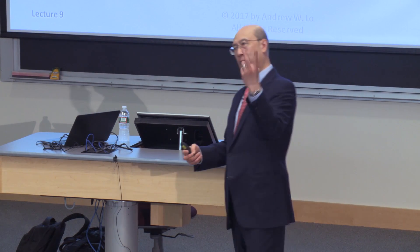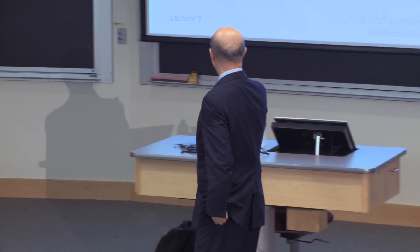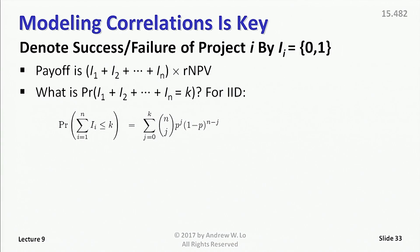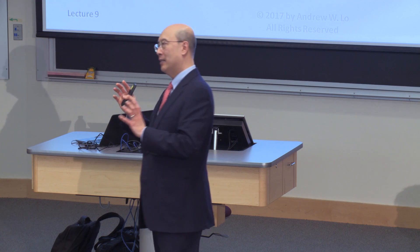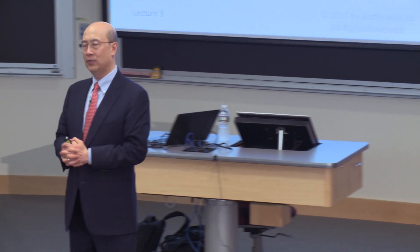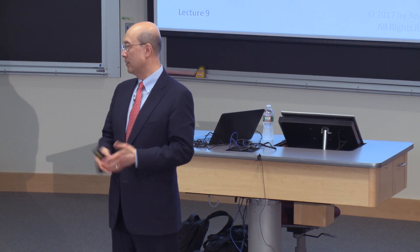If it's independently and identically distributed, like those two green pieces of paper I started out with, then the answer is simple — the distribution is just a binomial, which you covered in your introductory data models and decisions course. But what if the correlation is not zero? How do we capture that? How do we capture what happened in the housing market? We know from that experience that correlations need not be zero.